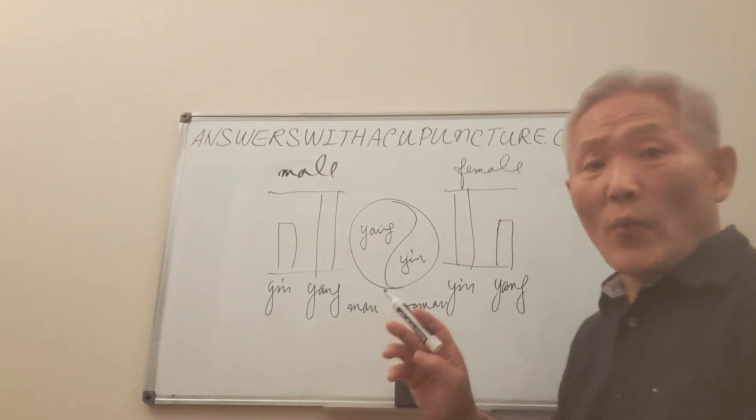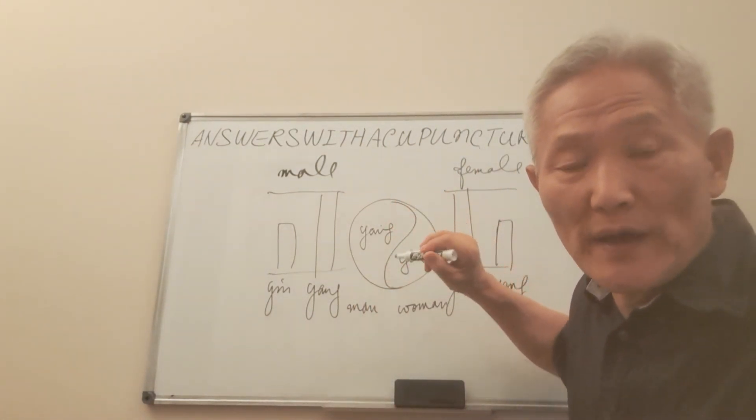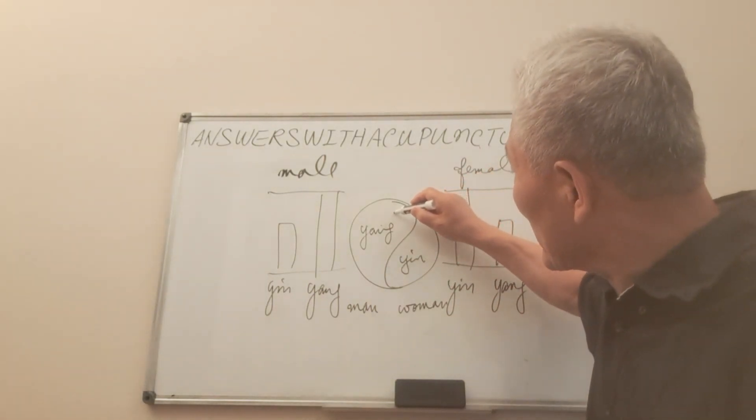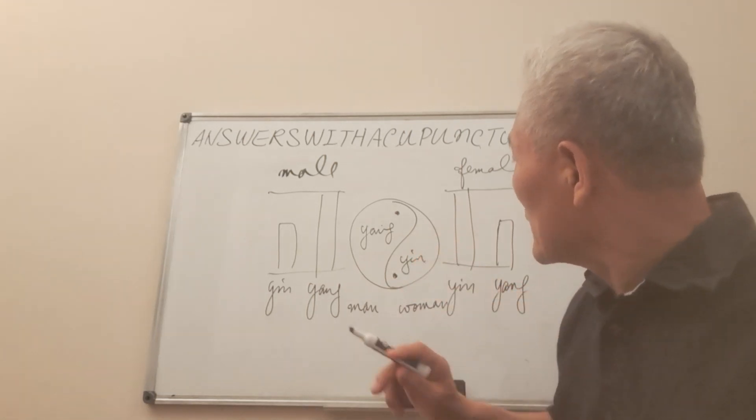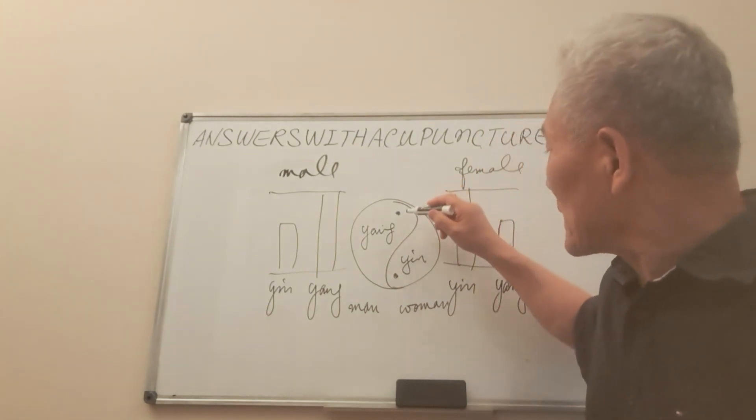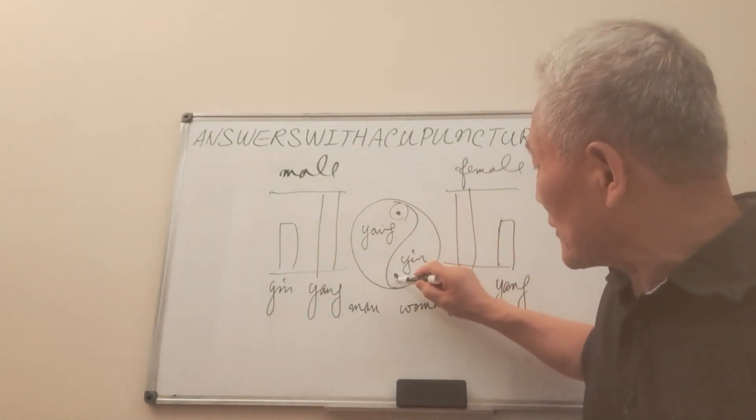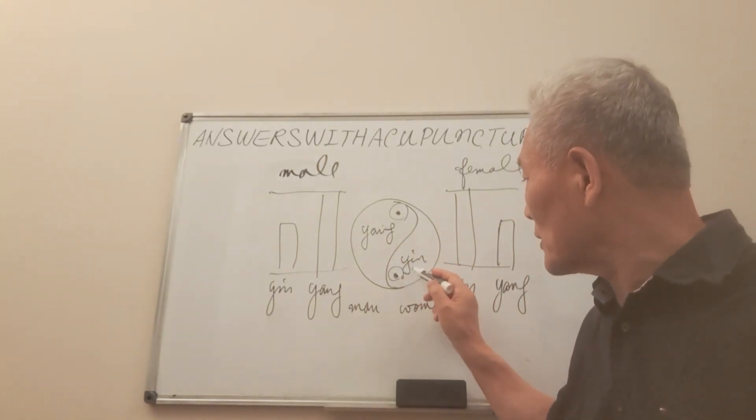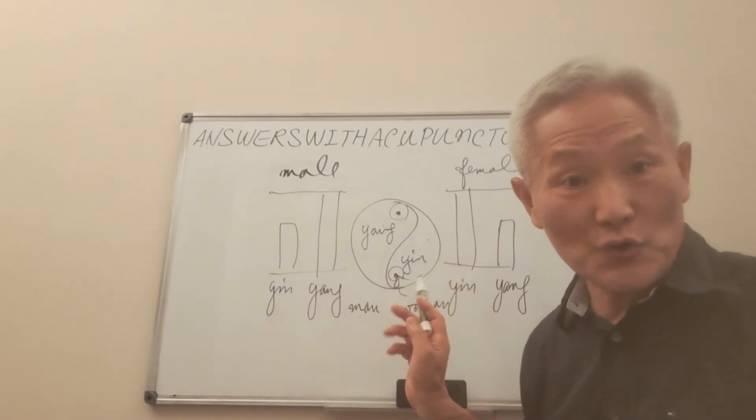Now, when you look at this kind of symbol, you may be able to find sometimes there is some kind of dot in here. What this dot means is this is a pelvic area. This is a woman's pelvic area, like the uterus area.